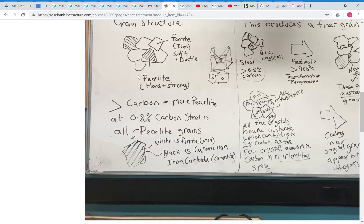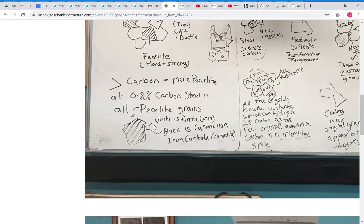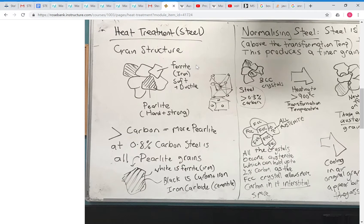Once you get up to 0.8% carbon — and you don't need a lot — you'll have 100% perlite and the steel will be about as hard as it can be via carbon. As you can see here, perlite is made up of white parts which are just the ferrite, a soft and ductile material, but it's layered with a mixture of carbon and iron called iron carbide, which we sometimes call cementite. These perlite grains are really strong.